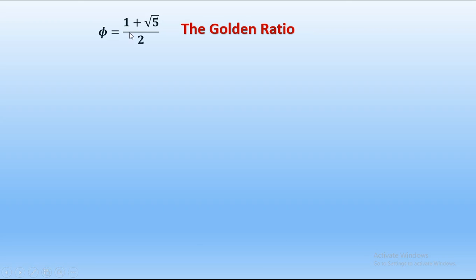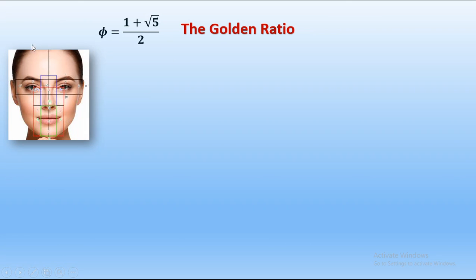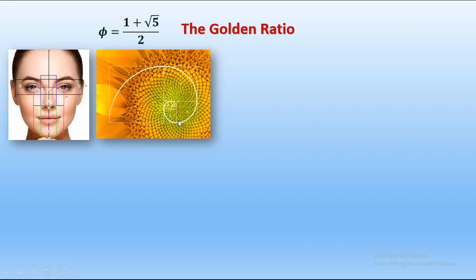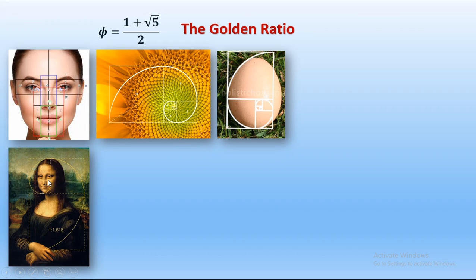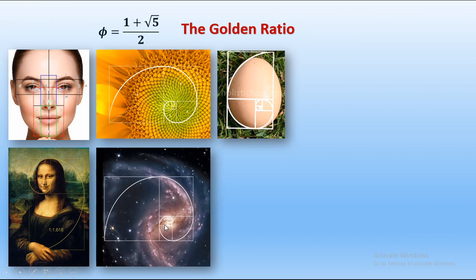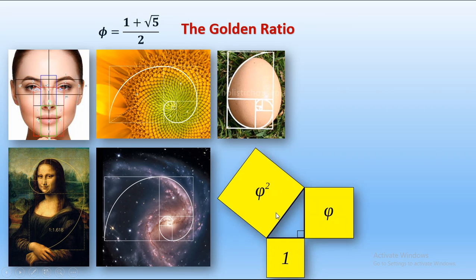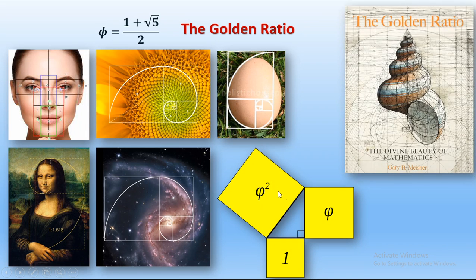The golden ratio is φ = (1 + √5)/2. This ratio is found in human faces — the distances between the eyes and nose, between the two eyes, between the two lips, between the cheeks, between the ears — all ratios inside the human body follow the golden ratio. The seeds arranged in a sunflower follow the golden ratio pattern. The shape of an egg is also in the golden ratio. The famous painting of Mona Lisa is in the golden ratio. The Milky Way galaxy and its spiral also follow the golden ratio. Kepler's triangle follows the golden ratio with sides 1, φ, and φ².